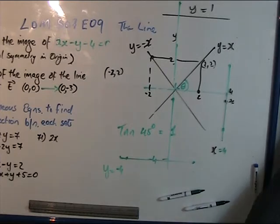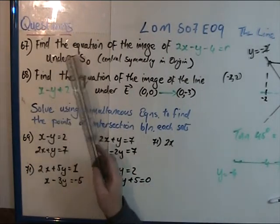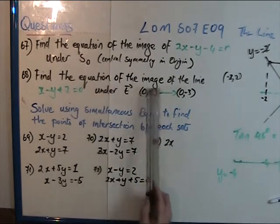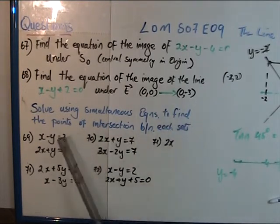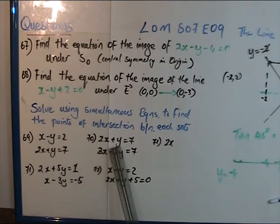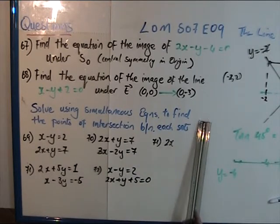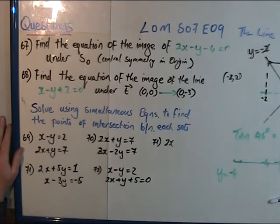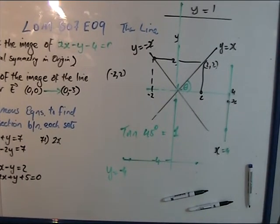To recap: we found the image of 2x plus y minus 4 equals 0 translated through the origin, and we solved for the intersection of two lines using simultaneous equations. When you get doing these questions, you lose your fear and gain confidence — that's the only way. Best of luck, and remember: Dublin Academy at gmail.com. God bless.